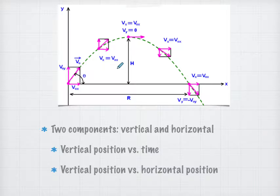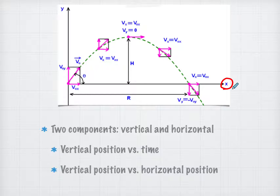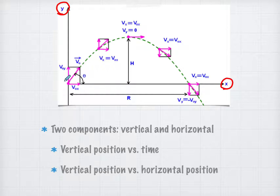When we look at projectile motion, this is a graph of the path of the projected object. Notice that the horizontal axis is the X axis, meaning horizontal distance, and the vertical axis is Y. This gives us a nice picture of a projectile motion, because when an object starts from this location and is shooting up, it has two components.